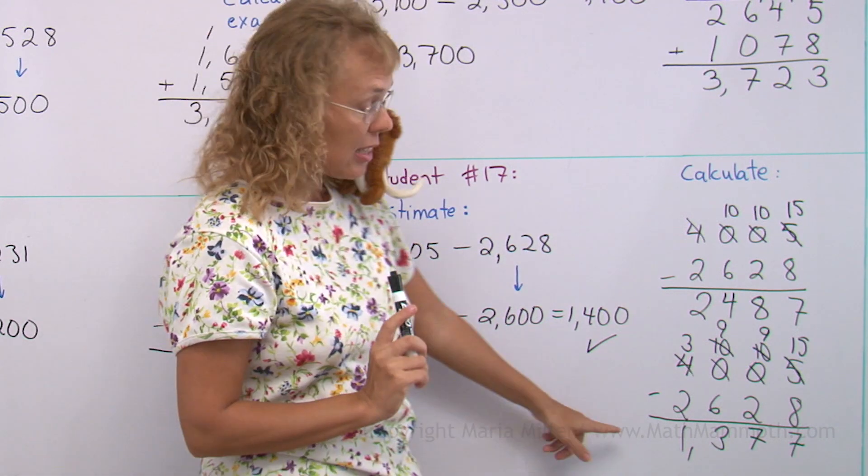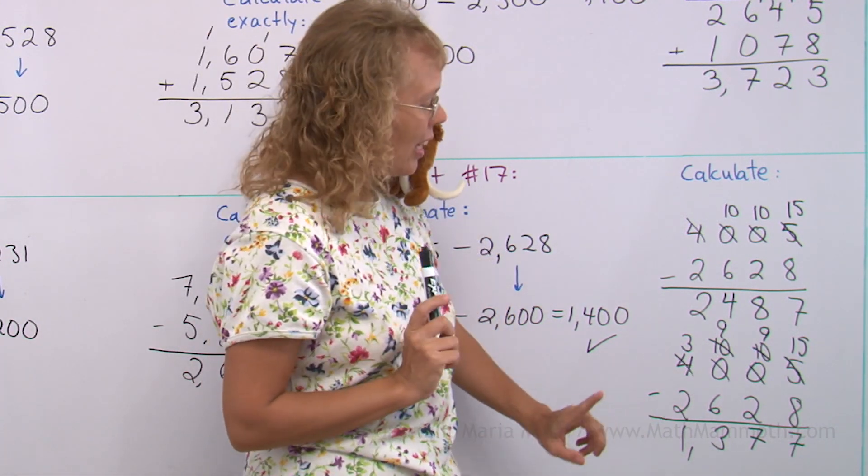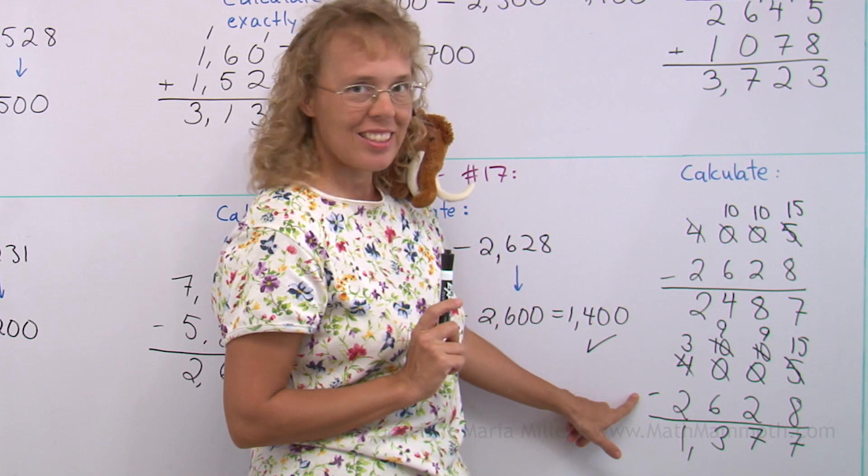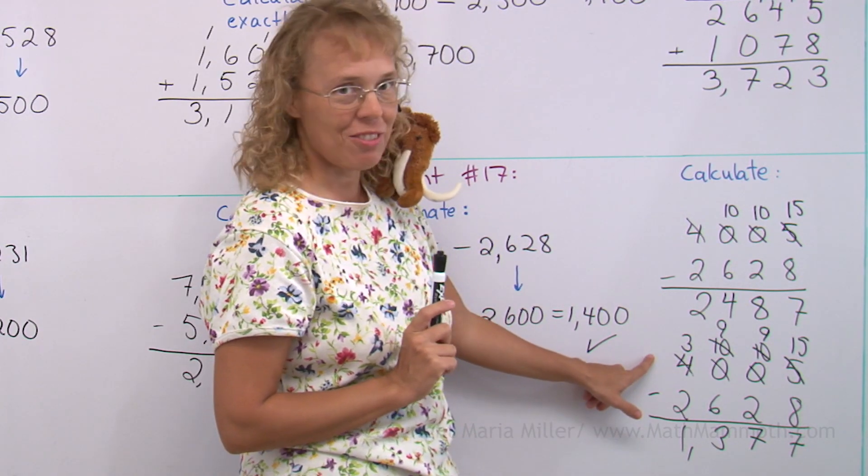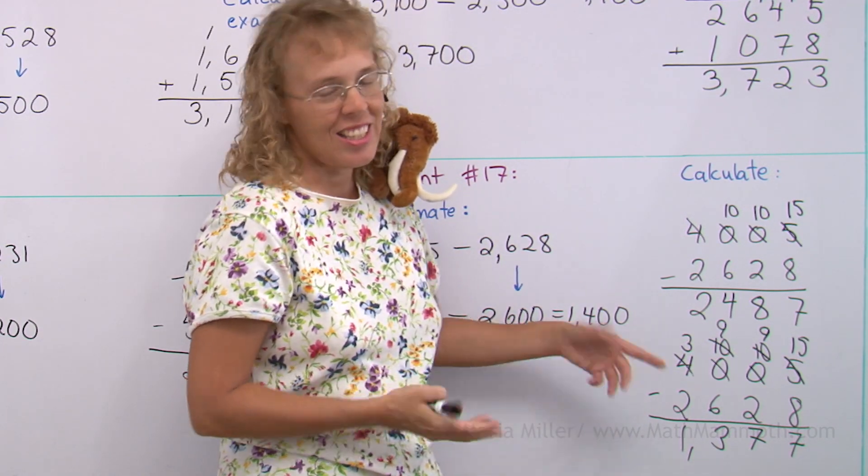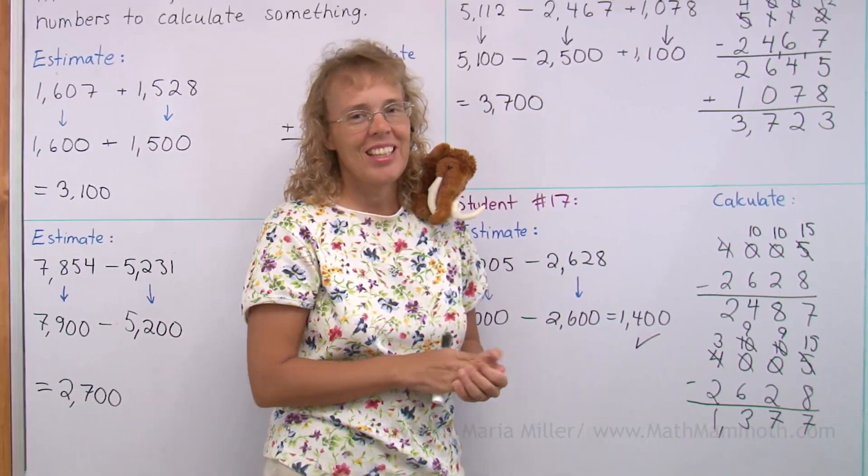And as a last check, since this was a subtraction problem, you can add this and this and check if you get 4005 from the addition. And that would be the final check. We're all done with this lesson.